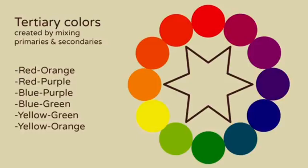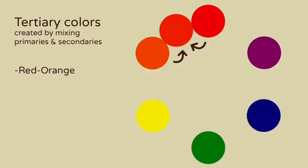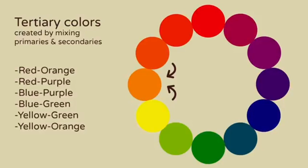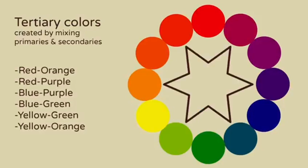Tertiary colors are created by mixing a primary color with a secondary color. These are red-orange, red-purple, blue-purple, blue-green, yellow-green, and yellow-orange. And now we have our basic color wheel.